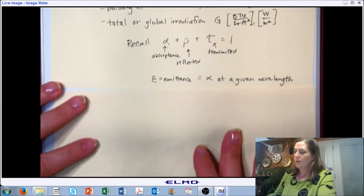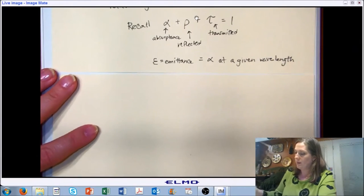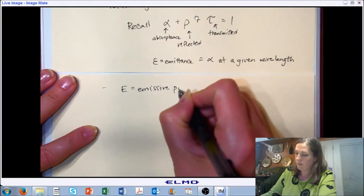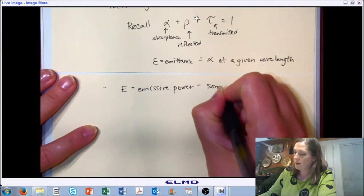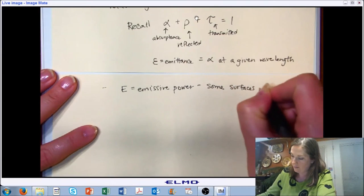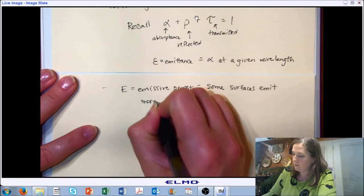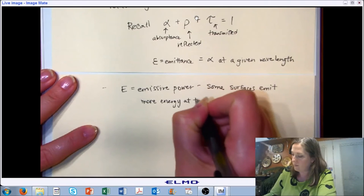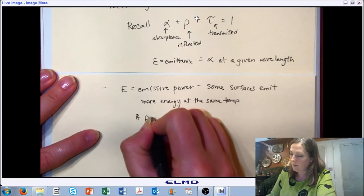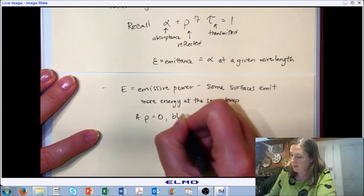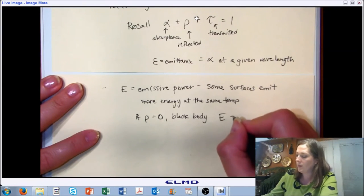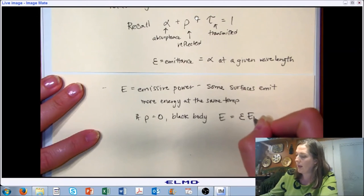One more piece if we're looking at emissive power. Some surfaces are going to emit more energy at the same temperature. If our reflectance is zero then we have a black body, and what a black body does is it absorbs everything that comes onto its surface. The governing equation for that is emissive power equals the emittance times the black body emissive power.